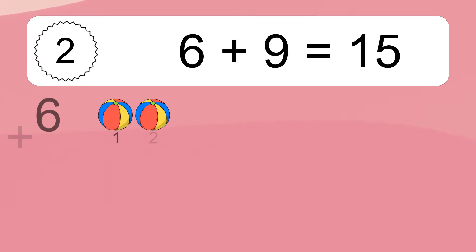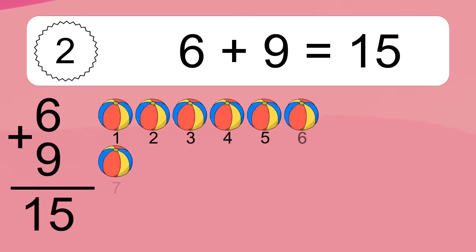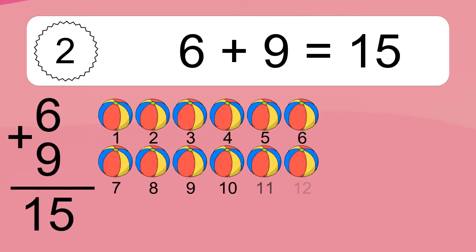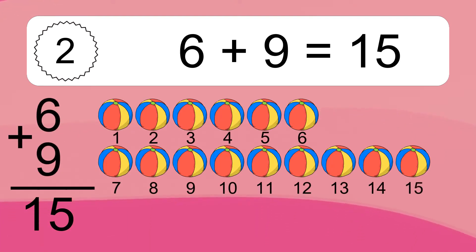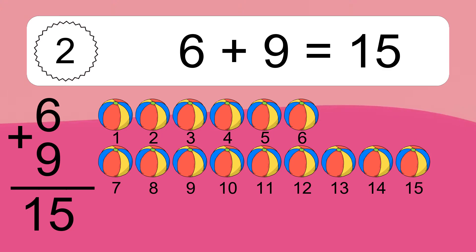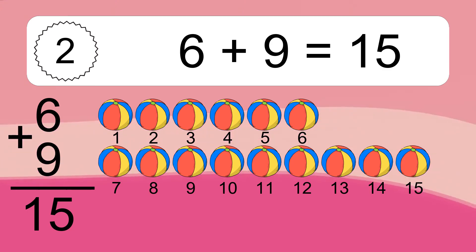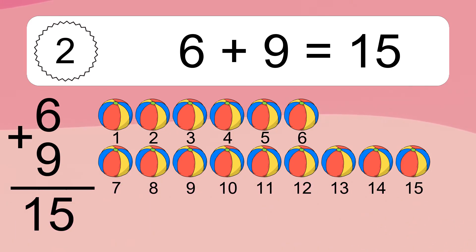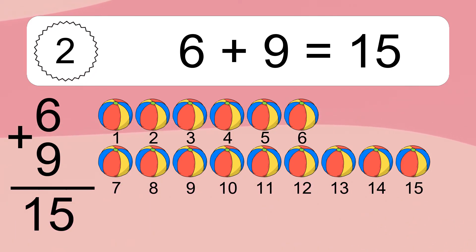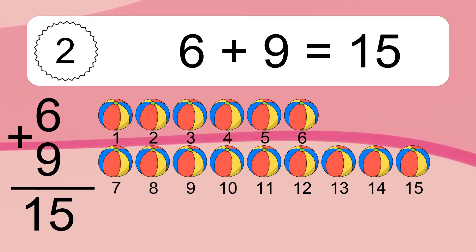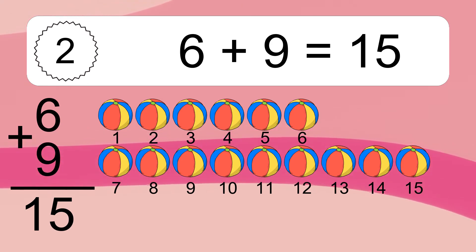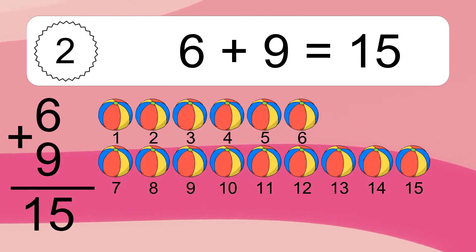6 plus 9 equals what? 6 plus 9 equals 15. Let's count it: 1, 2, 3, 4, 5, 6, 7, 8, 9, 10, 11, 12, 13, 14, 15.